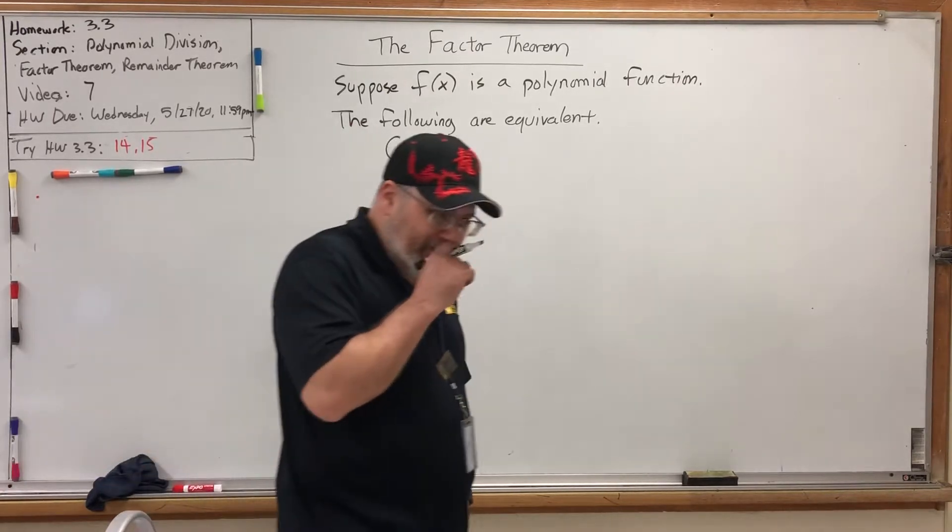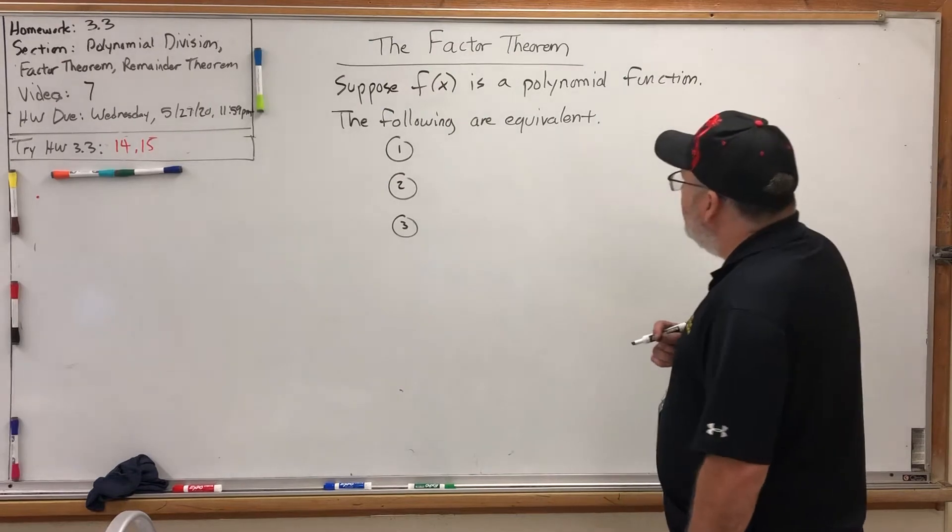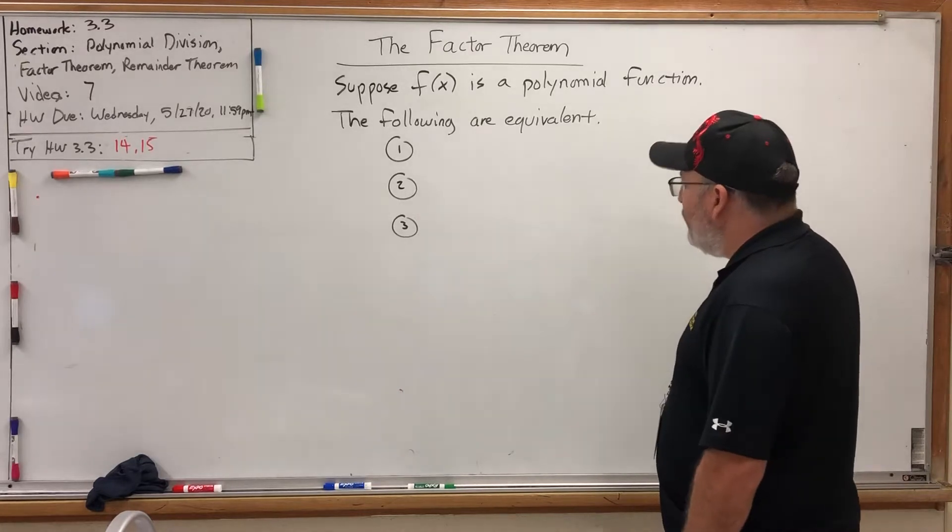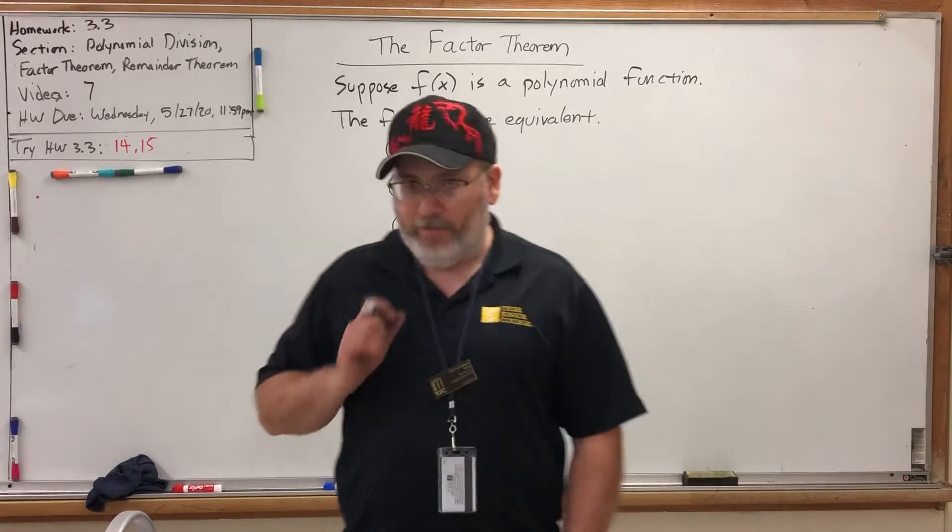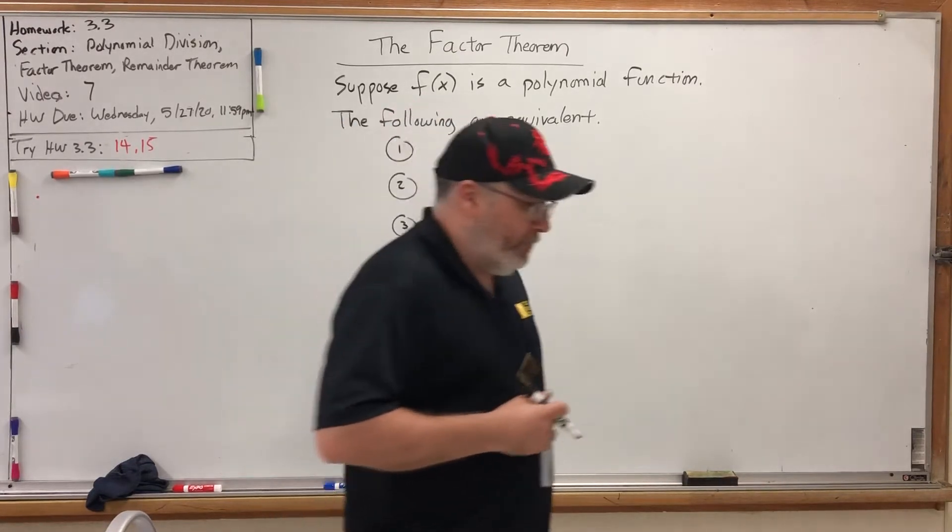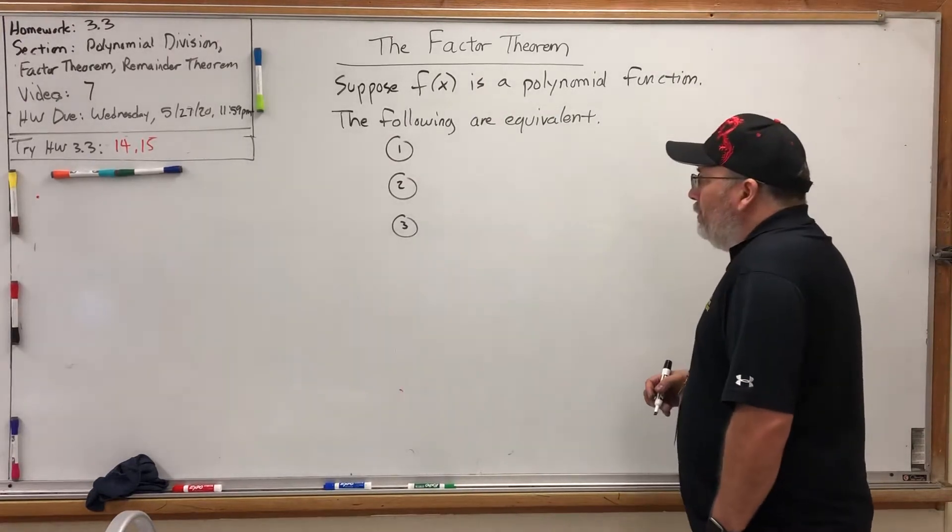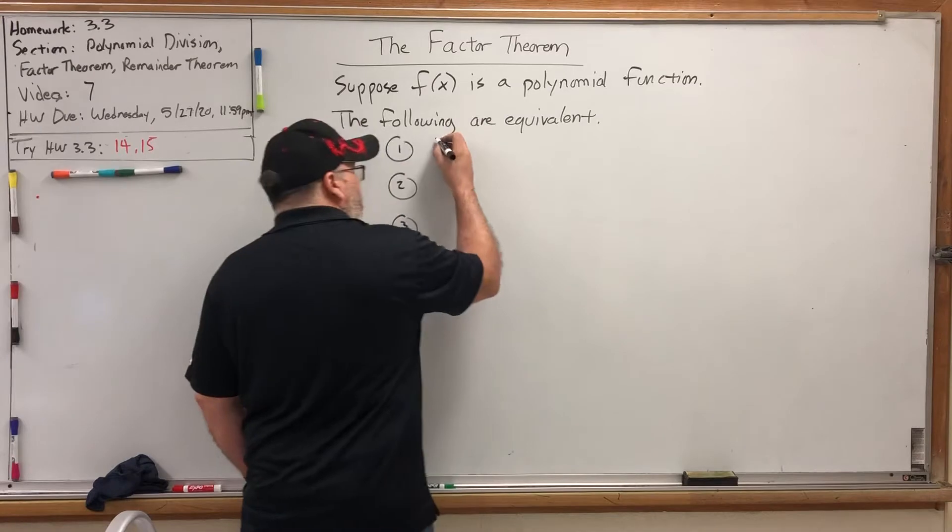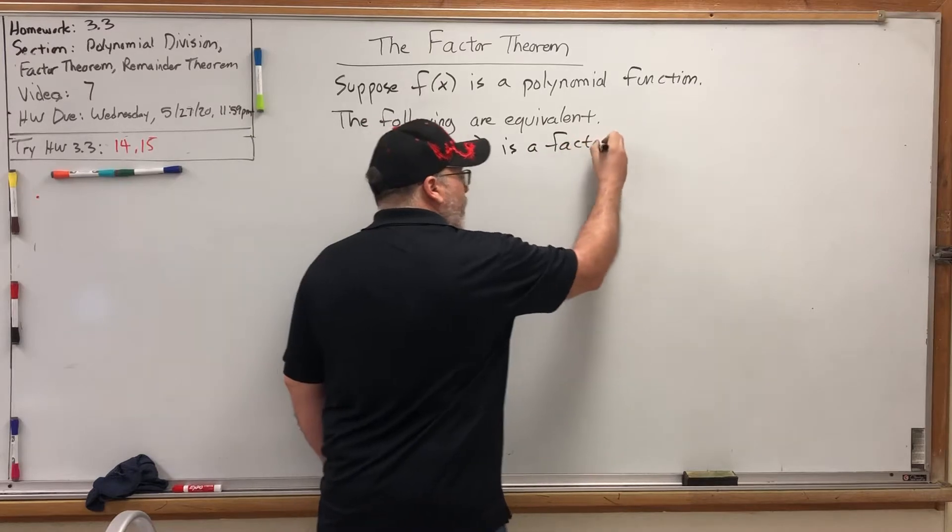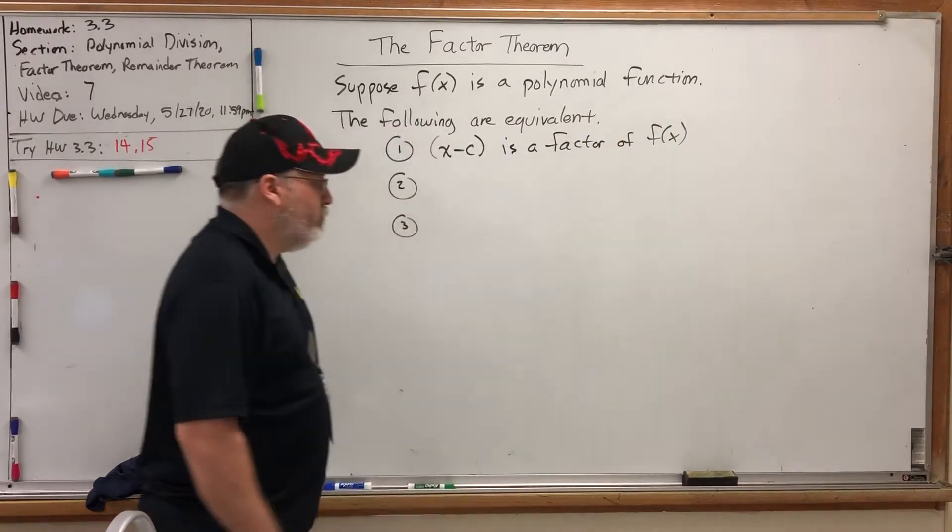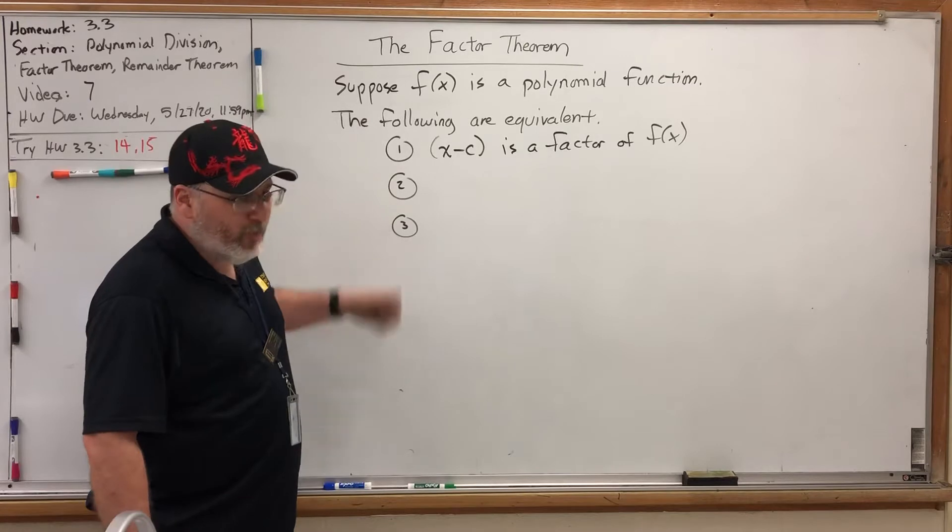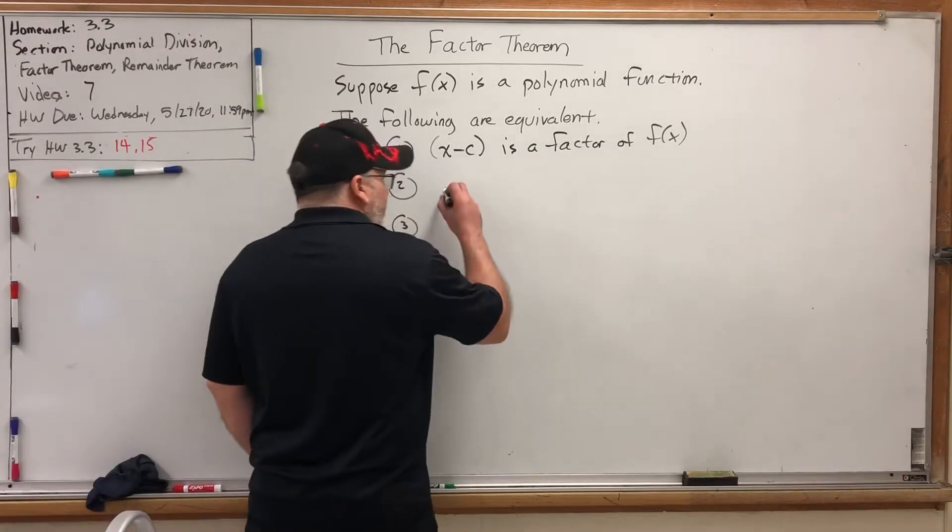So I'm not going to build it, I'm just going to tell you what it is. Suppose F(x) is a polynomial function. The following are equivalent, and what that means is if one of them is true, then all of them are true, and vice versa. If one of them is false, then all of them are false. Number one, (x-c) is a factor of F(x).